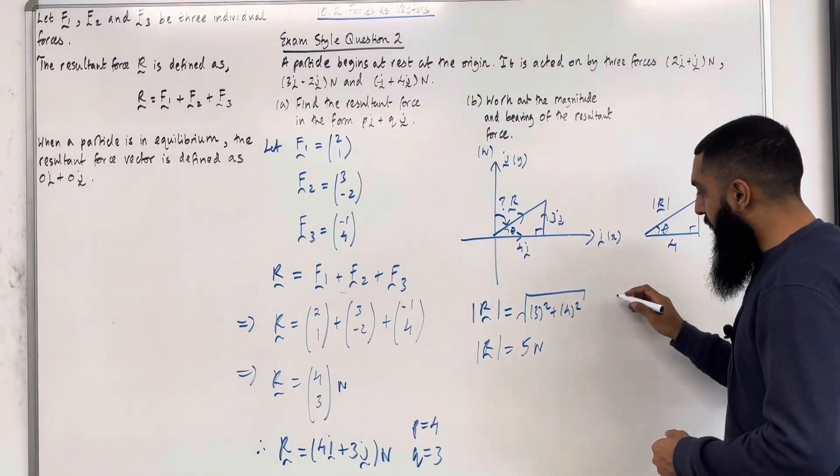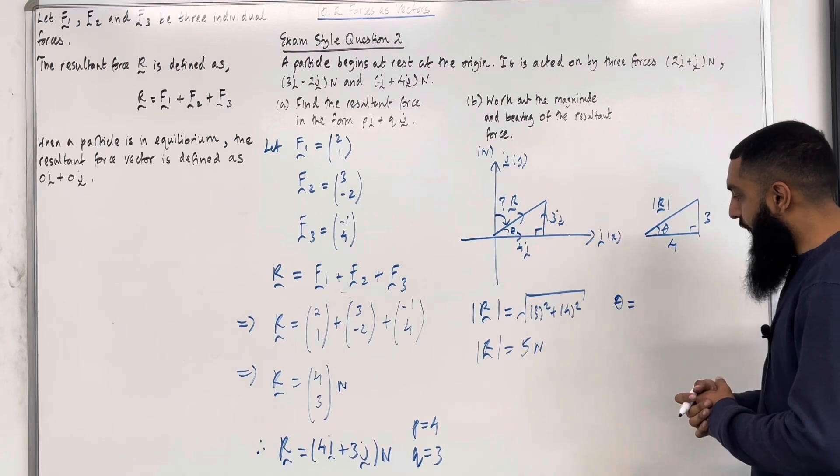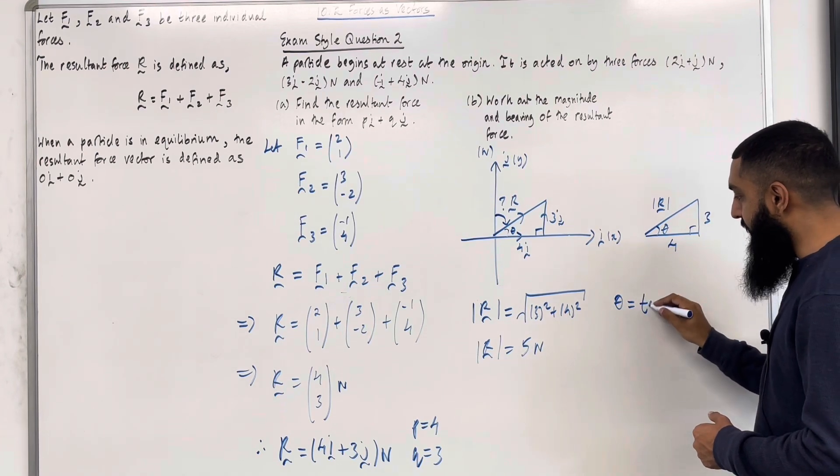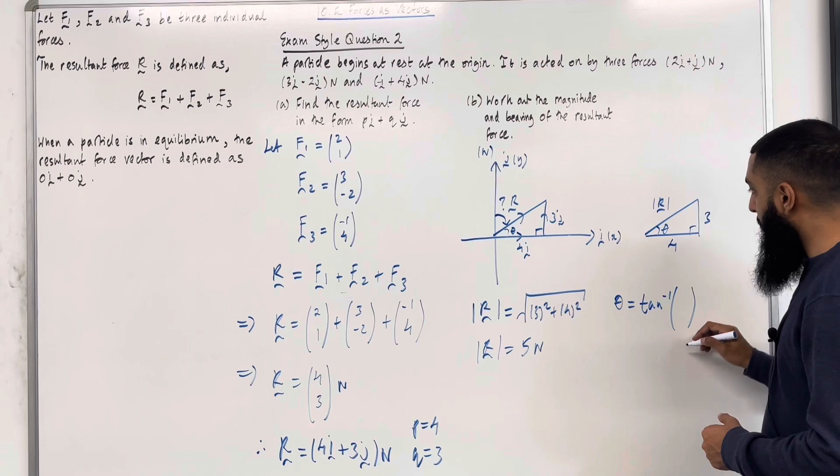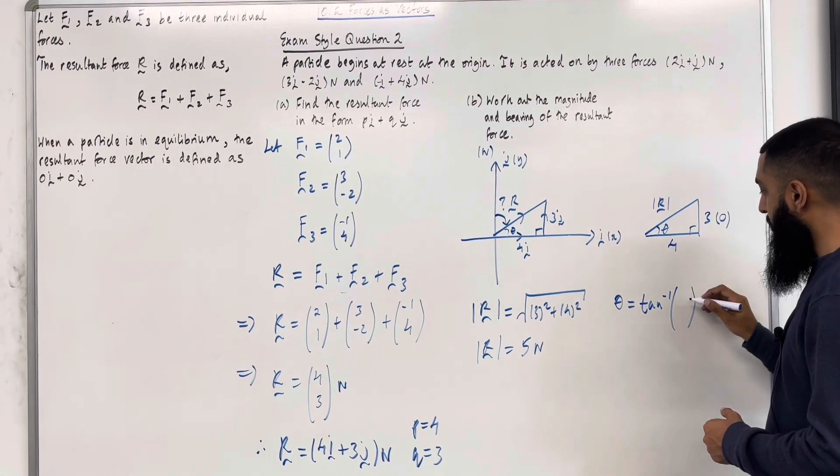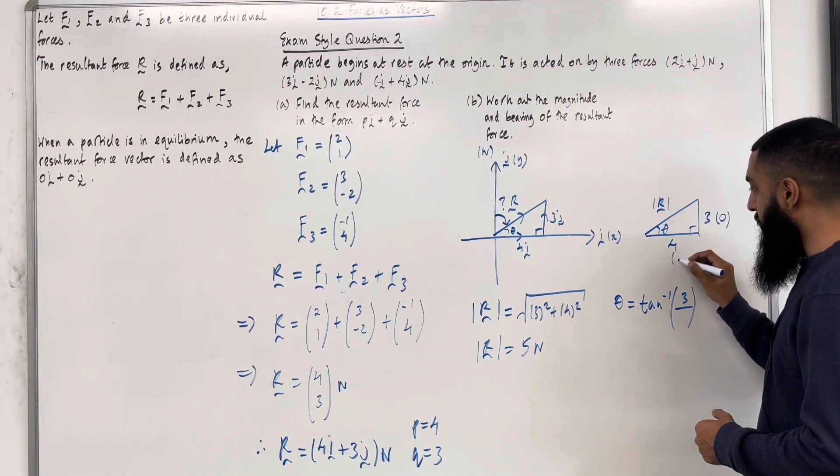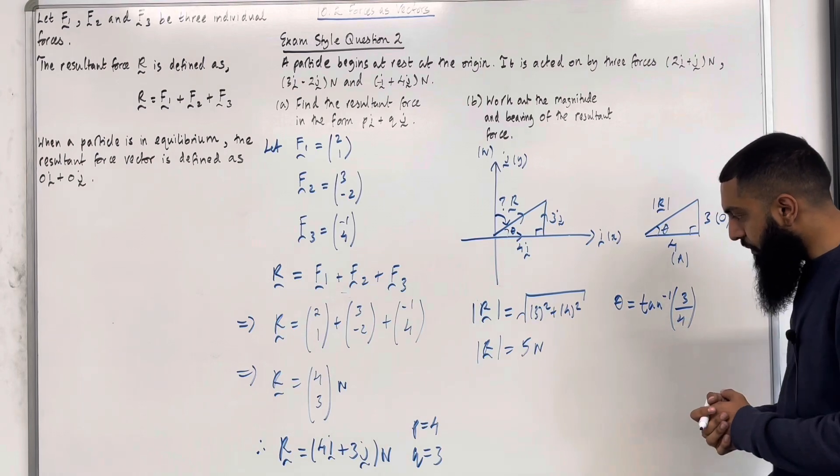Theta. How do we work out theta? Ladies and gents, we can simply do tan inverse of opposite, which is 3, over adjacent, which is 4. So, that is my theta.